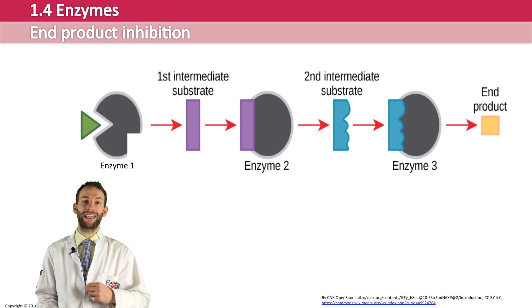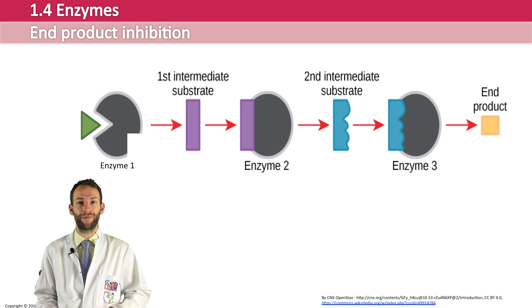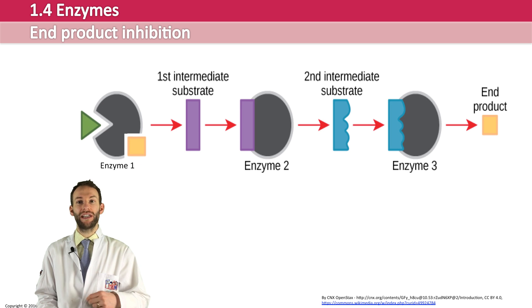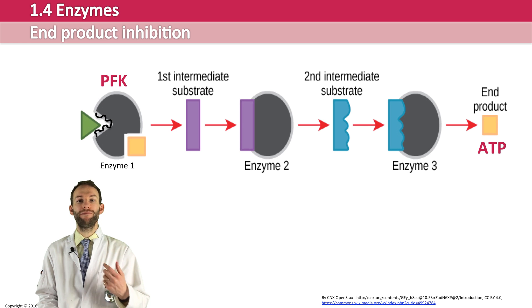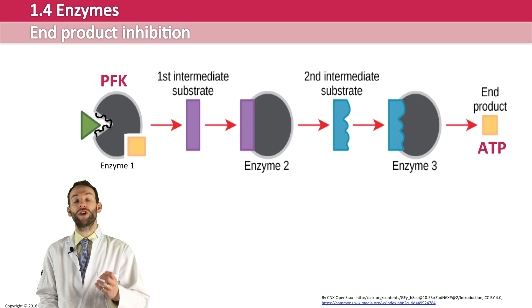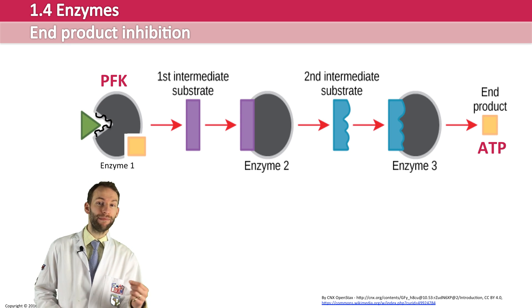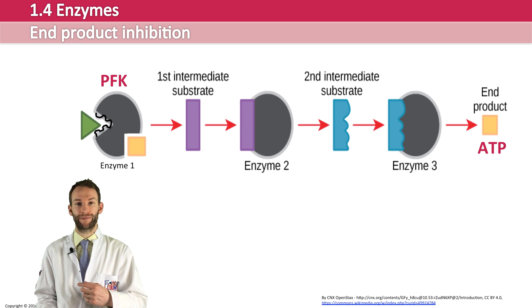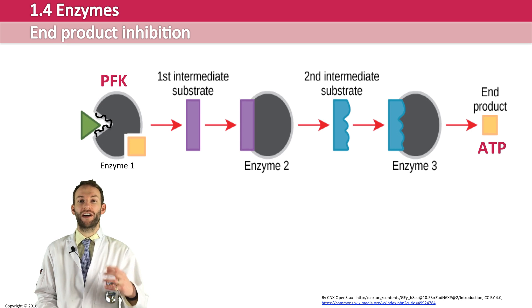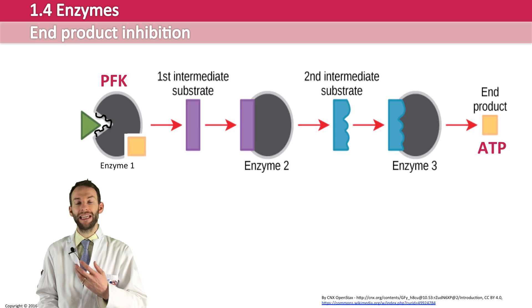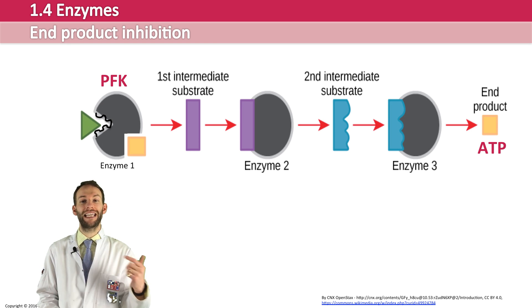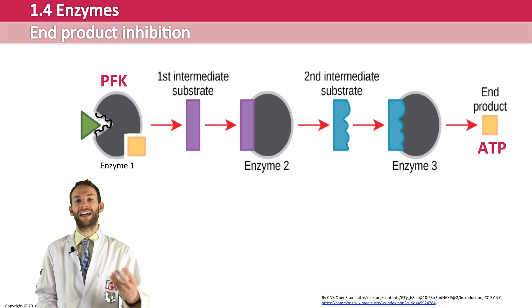The example you'll come across in the course is something called PFK, found in respiration. In respiration you want to make ATP molecules, and there is an enzyme called phosphofructokinase, or PFK. When you make ATP you need phosphofructokinase, but once you've got lots of ATP made, it actually reversibly and non-competitively inhibits this phosphofructokinase. So when ATP is low, phosphofructokinase works really fast and makes lots of ATP; but when ATP is high, it goes back and inhibits phosphofructokinase so the reaction slows down.